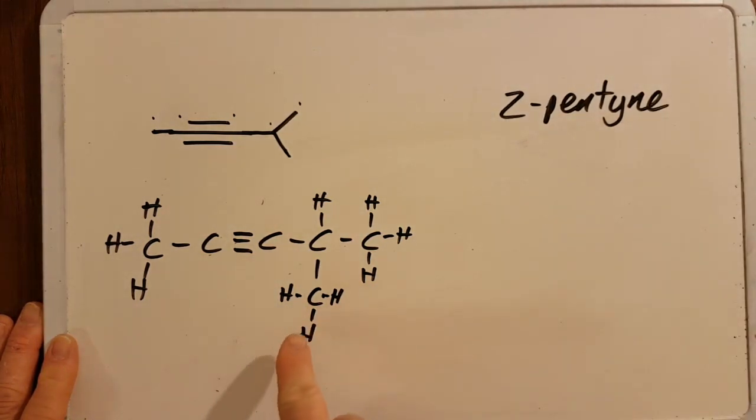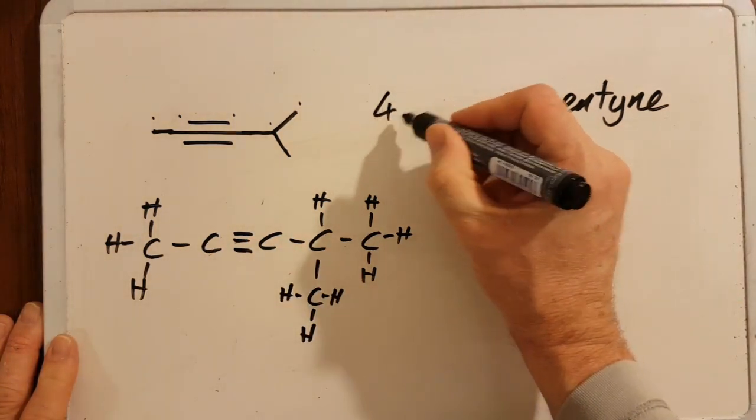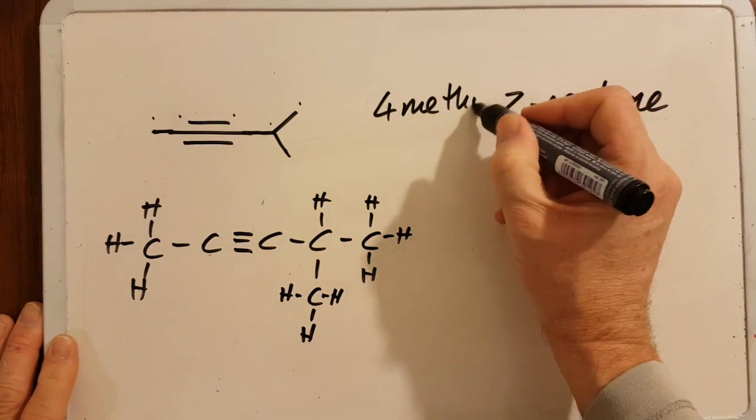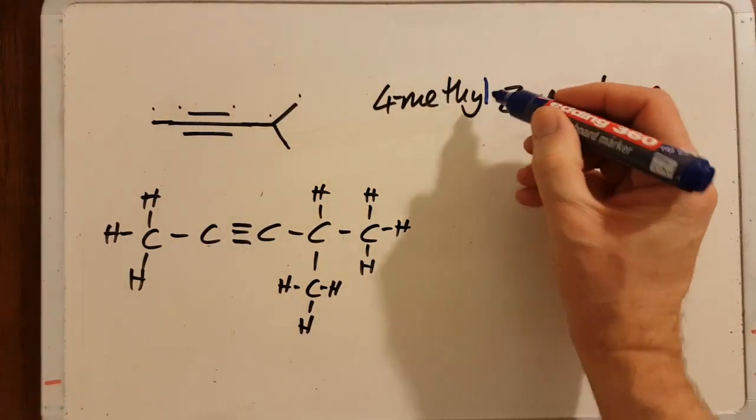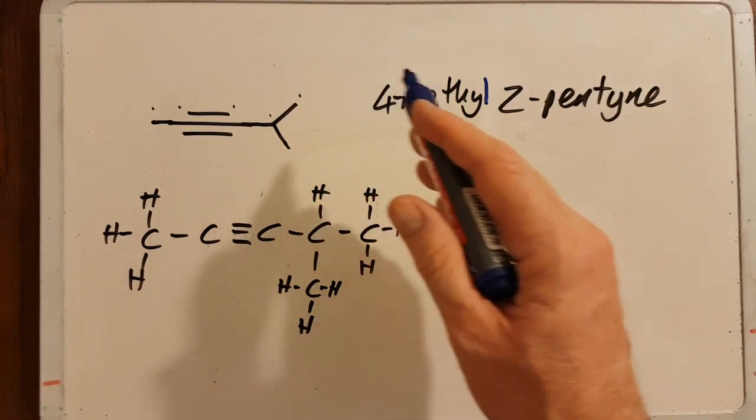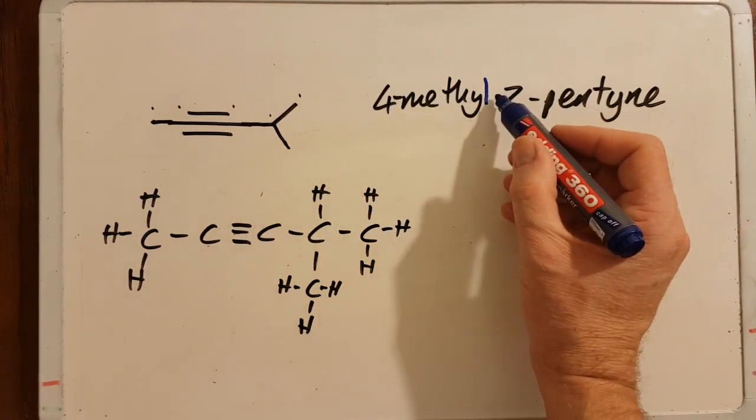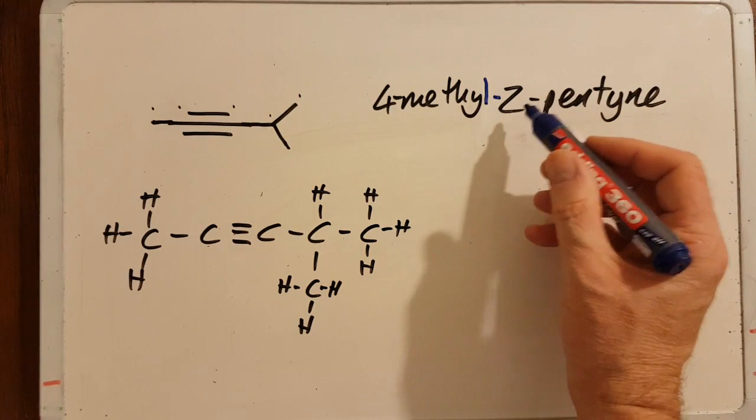But you've still got to tell me about this methyl group, and the methyl group is on the fourth one, so it's 4-methyl. And don't forget, commas between the numbers but dashes between the numbers and the words.